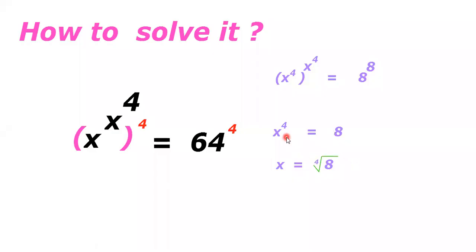So x power 4 is equal to 8, then x equals 8 power 1 by 4. That is fourth root of 8, that is nothing but 2 power 3 by 4.